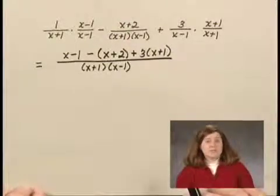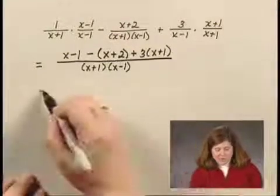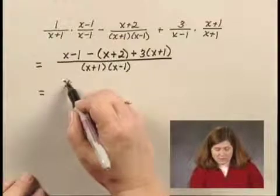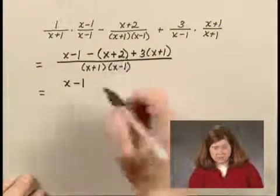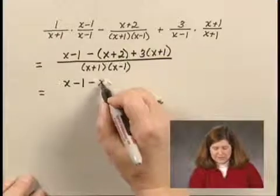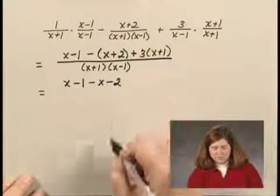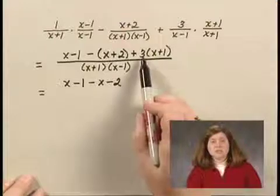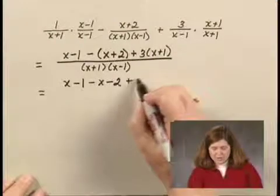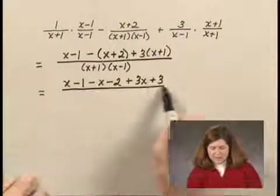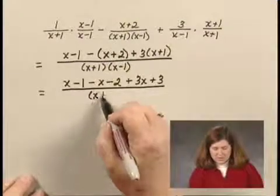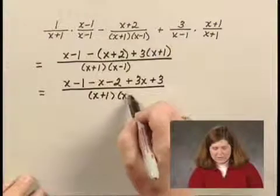Now I need to see what I can do with simplifying in the numerator. The numerator is x minus 1, and then I take out the parentheses and write minus x minus 2. And then I can multiply 3 times x plus 1 and get plus 3x plus 3. And all that is over the denominator x plus 1 times x minus 1.